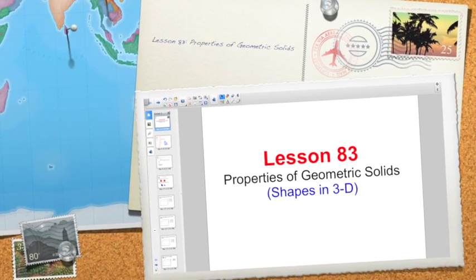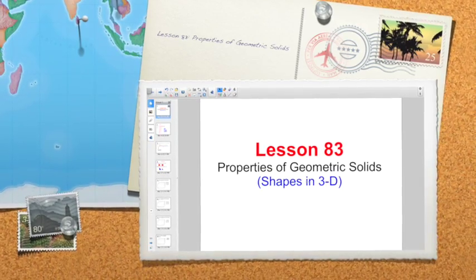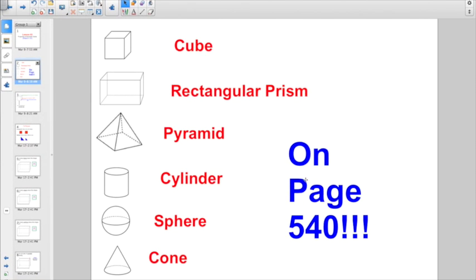Today we're talking about properties of geometric solids, which basically means shapes in 3D. Over on page 540 of your book, like most of the geometry, the vocabulary is so important.